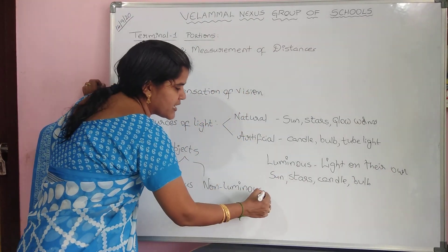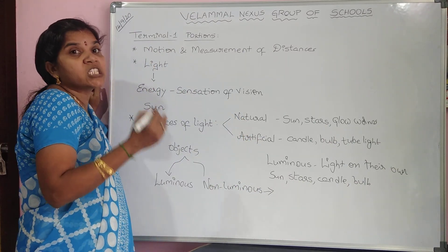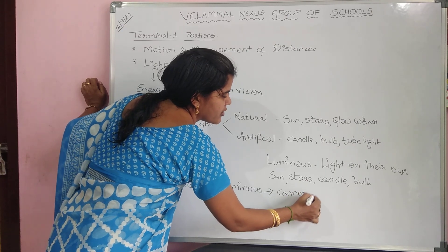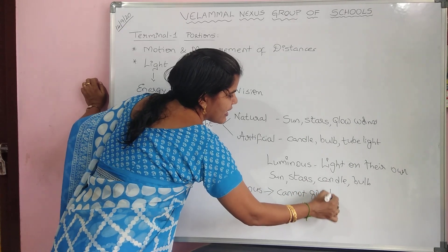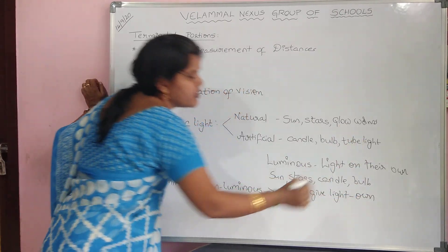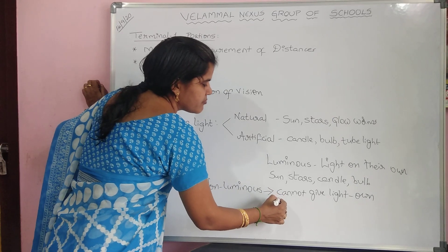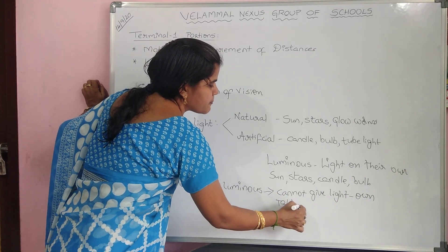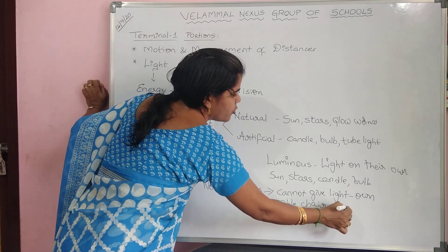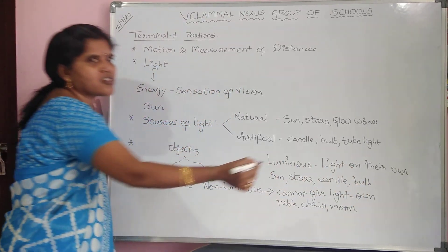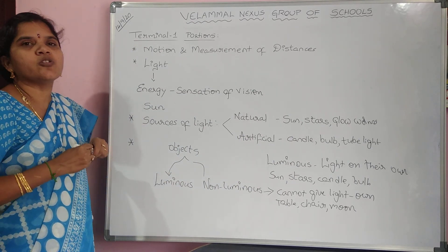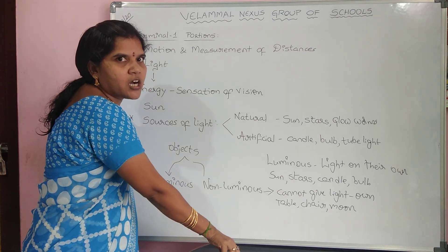Non-luminous objects are those which cannot give light on their own. Examples are table, chair, moon, etc. Moon is an example of a non-luminous body because moon cannot give light on its own — moon gives only the reflection of sunlight.